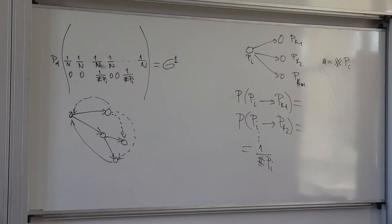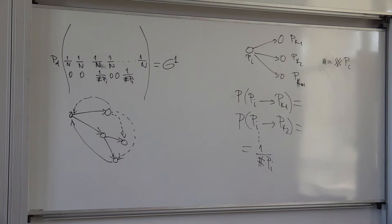Instead you would simply list for every row where the non-zero entries are. Multiplying a vector by a sparse matrix is extremely simple: you see where the non-zero entries are in the column, choose the corresponding entries in the row vector, multiply them, and sum. So this multiplication can be done extremely fast.